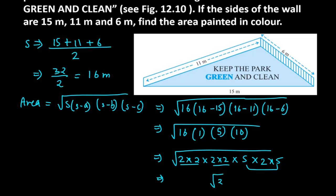But one 2 is left alone, so we will keep it in the root. All the others will come out. So what's left? This square pair will give 2. 2 into 2 is 4. 4 into 5 is 20. So the answer is 20 root 2 meter square.